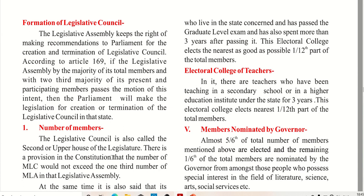The legislative assembly has the right to make recommendations to Parliament for the creation and termination of the Legislative Council. According to Article 169, if the Legislative Assembly passes a motion by a majority of its total members and two-thirds of the participating members, then Parliament will make legislation for creating or terminating the LC in that state.